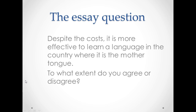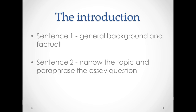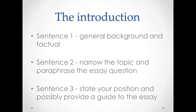You must answer the question — do you agree or disagree, and to what extent, or by how far. Also notice the essay topic mentions the costs, so you need to talk about this in your essay. The simplest way to write a Task 2 introduction: sentence one, write about the general background and factual information; sentence two, paraphrase the essay question and make the topic clear; and sentence three, state your position and give your opinion. We call this the thesis statement.